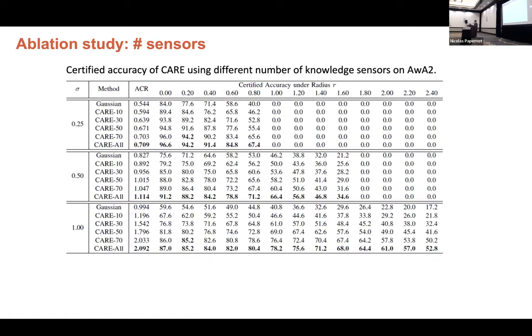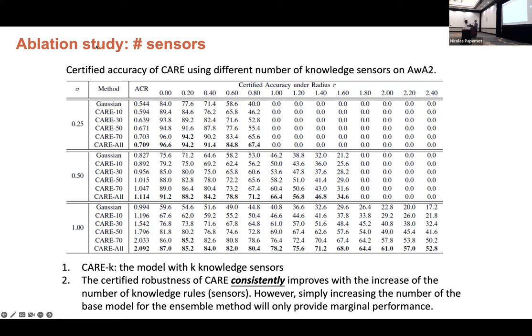So one interesting ablation study is that if more sensors means more robustness. And the answer is we conduct one additional ablation study where we constrain the model with K knowledge sensors. And the result shows that with more sensors, the certified robustness will be consistently improved.